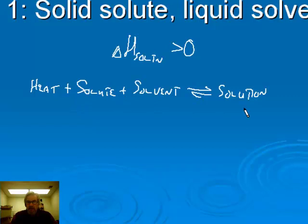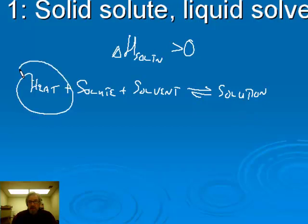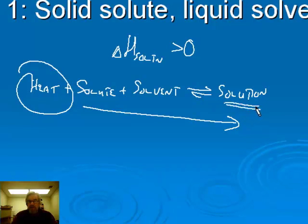If delta H is positive, that means there's a heat input, so I can write heat almost as if it's a reactant — I have to put in heat, solute, and solvent to get solution. Remembering Le Chatelier's principle: when you put a system at dynamic equilibrium under a stress and change the conditions, it will respond to relieve that stress. So if I add heat — in other words, raise the temperature — the system shifts to the right to use up the heat, consuming solute and solvent and producing more solution.